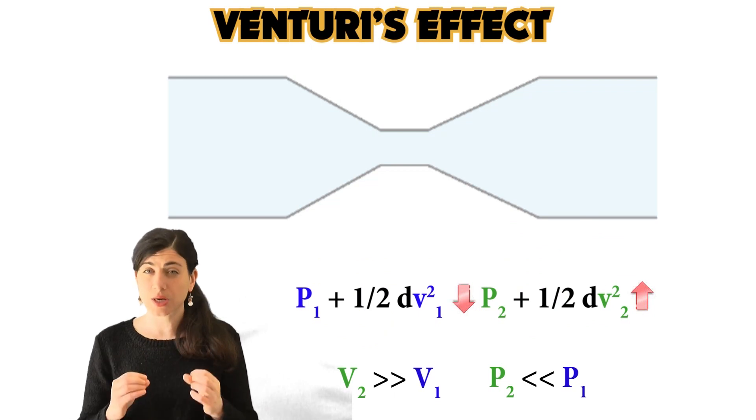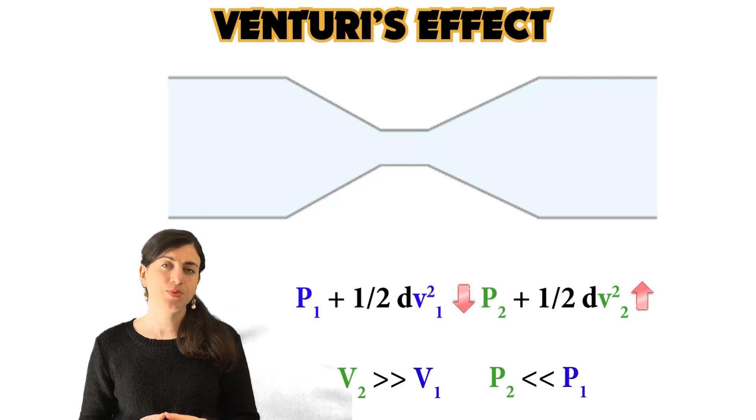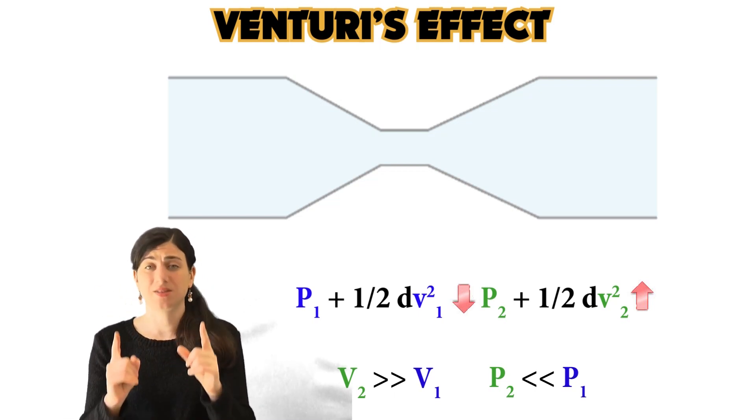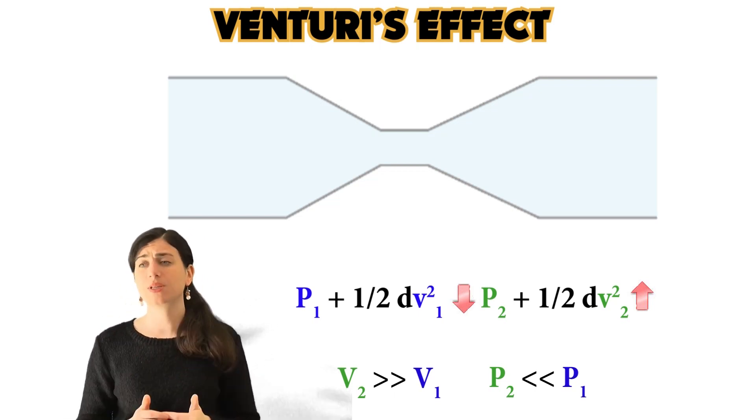And this is what actually happens in this kind of pipe. So in this kind of pipe, the speed in the narrowing will be greater. However, the pressure will be decreased.